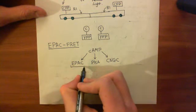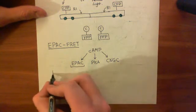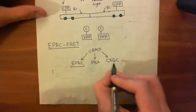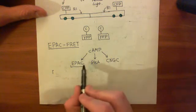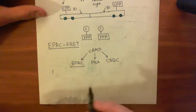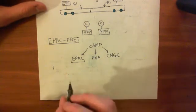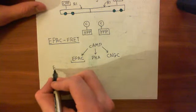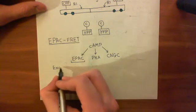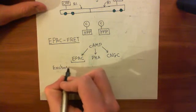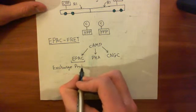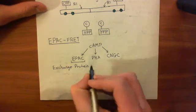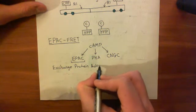But EPAC here - we're going to look at this one, by the way. All the calcium sensors can be grouped into this. We've looked at protein kinase A. Now we're going to look at EPAC. Then we'll look at cyclic nucleotide gated channels. So, EPAC - what does it stand for? It stands for the Exchange Protein Activated by Cyclic AMP.